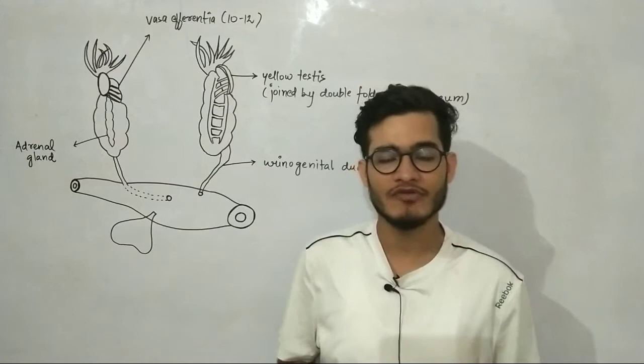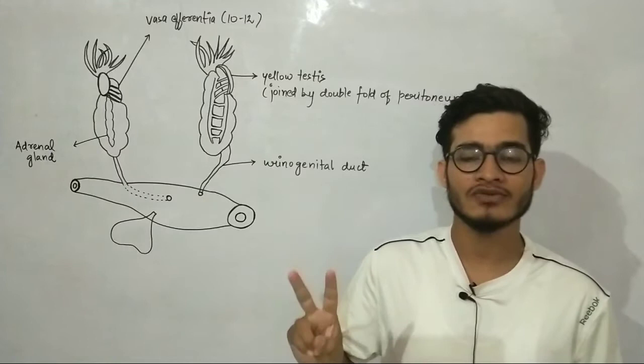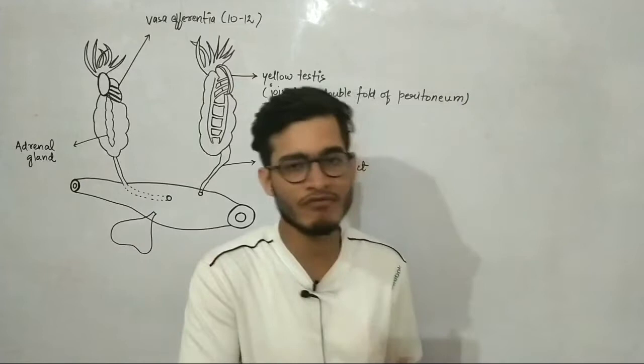Hey guys, welcome back to another video from Ozone Classes. In this video we will be talking about the male reproductive system of frog. We have talked about all the important anatomical or morphological features. We are left with two topics only: the male reproductive system and the female reproductive system and morphogenesis, which we will include in female.